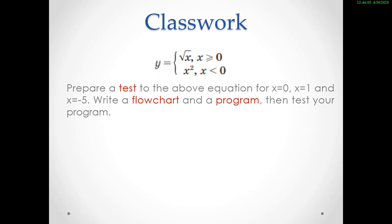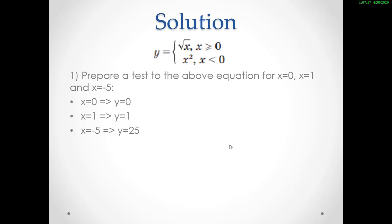I hope all of you have done the task. So let's compare your results with mine. My solution is like this. Firstly, it is asked to prepare a test for the given equation when x is equal to 0, x is equal to 1, and x is equal to minus 5. When x is equal to 0, we put x here because the constraint says x is greater than or equal to 0, and we get y is equal to 0. When x is equal to 1, we again substitute and get y is equal to 1. When x is equal to minus 5, we put it in the second equation because x is less than 0, so we get y as 25. So we have prepared our tests.